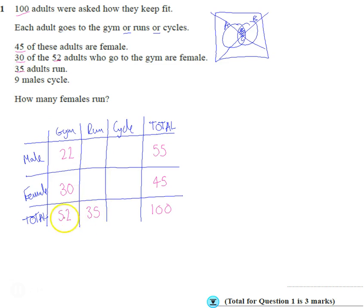And then, so if we add these up, that makes 87. That must be 13 total for the cycle. We know nine of the males cycle, so we know four of the females cycle.